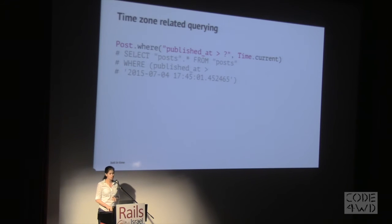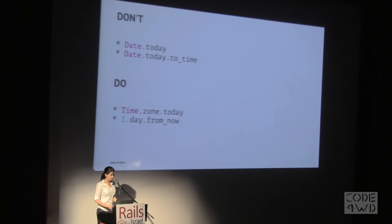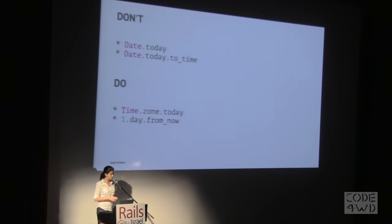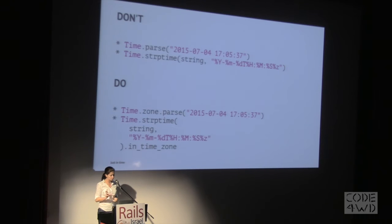When querying time zones in Rails, please use Time.current and not Time.now. Don't use Time.now — use Time.current or 2.hours.ago. Don't use Date.today either; instead use Time.zone.today or 1.day.from_now. And the last thing: if you are parsing strings, instead of using Time.parse, go through the zone — do Time.zone.parse and pass it the string. If you are using strptime, finish that call with in_time_zone to get it in your localized time.